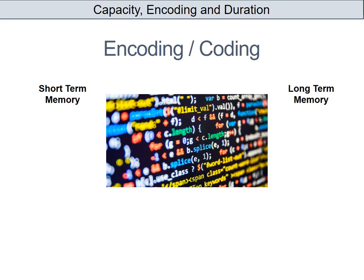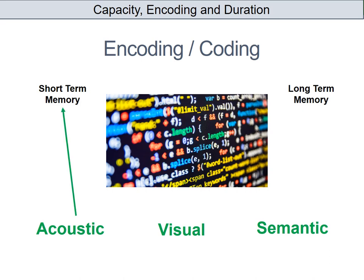There are three different forms of coding that our memories use: acoustic, visual, and semantic. Acoustic is auditory — encoding information through the way that we hear things. Visual is encoding something through seeing. Semantic is about encoding something through meaning. The chief form of coding in short-term memory is acoustic, and the chief form of encoding in long-term memory is semantic.